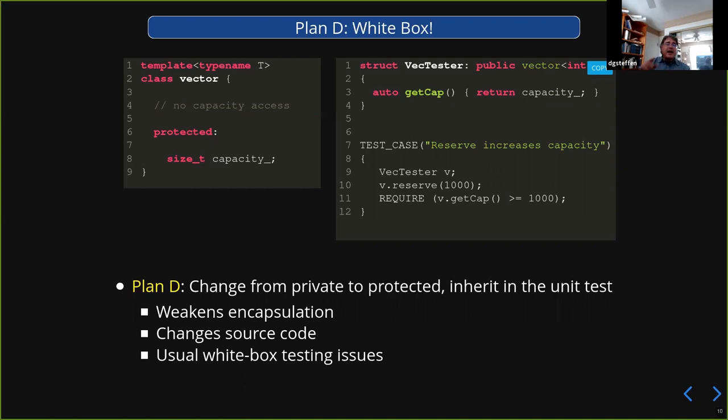Personally, I don't like the 'make it protected and inherit' approach. I think this approach is more commonly used in more object-oriented languages like Smalltalk or Java. But if you don't like this, or if maybe this thing is at the base of a big complicated inheritance hierarchy and it's a really bad idea for it to be protected and not private, plan D fails. What do you do? You go to plan E.